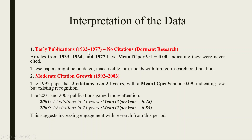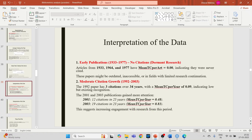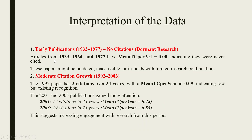Interpretation of the data — Early publications (1933 to 1977): we have zero citations, considered dormant research. Articles from 1933, 1964, and 1977 have mean TC per article of zero, indicating they were never cited — possibly outdated or inaccessible. Moderate citation growth (1992 to 2003): the 1992 paper has 3 citations over 34 years with mean TC per year of 0.09, indicating low but existing recognition. The 2001 and 2003 publications gained more attention, suggesting increasing engagement with research from this period.